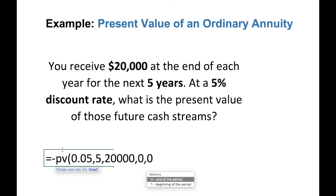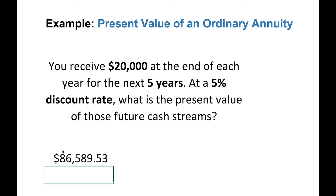This last part of the formula only matters when you're doing an annuity. If it's an ordinary annuity, you enter zero or leave it blank. If it's an annuity due, then you put one. Leaving it blank or entering zero assumes an ordinary annuity, and the result gives us the present value of those five annual $20,000 payments.